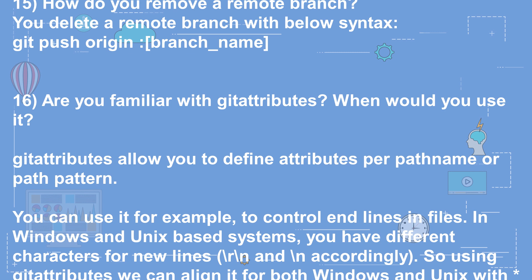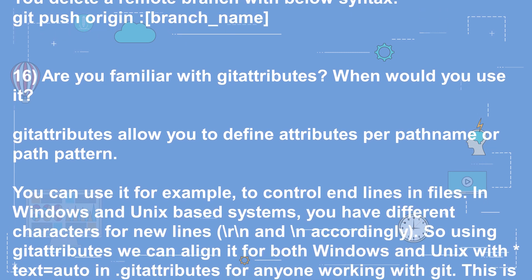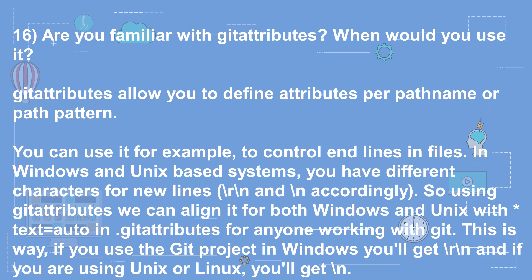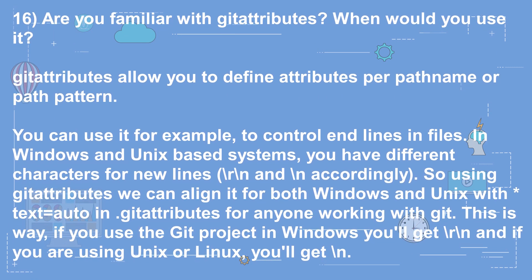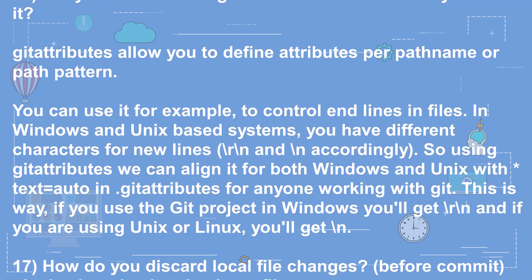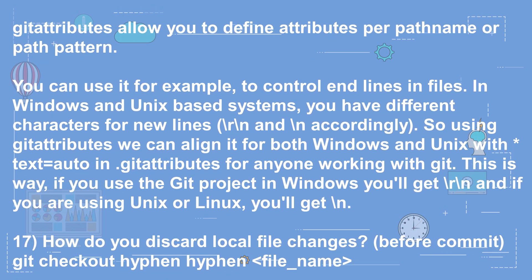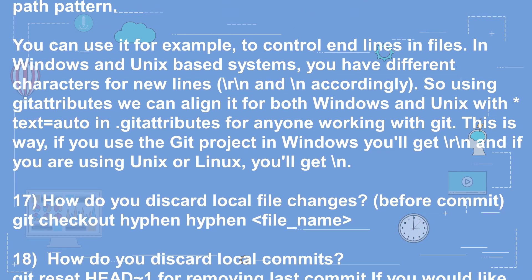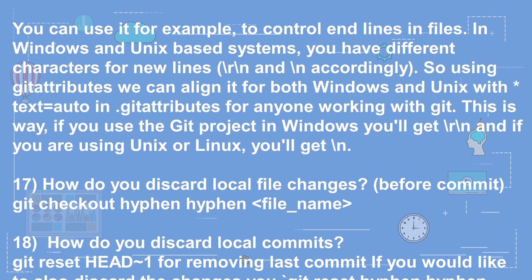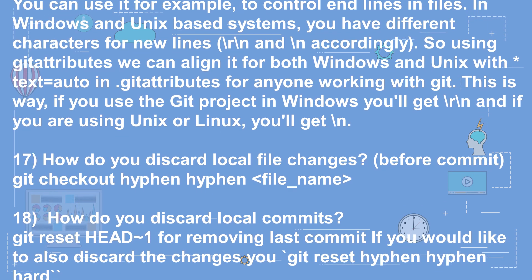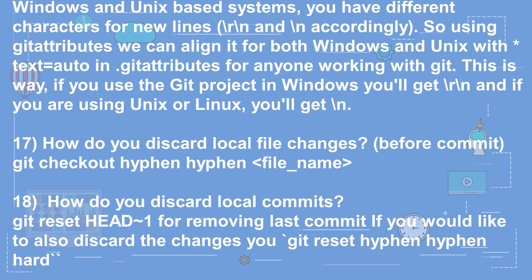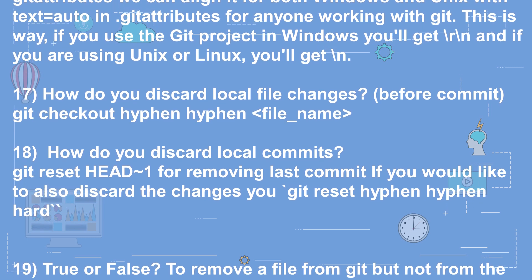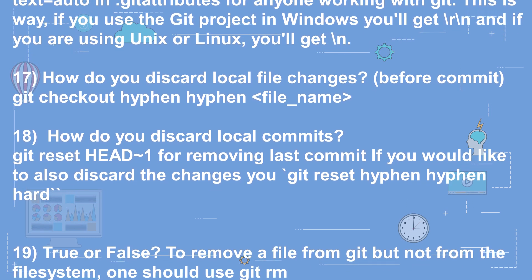Question 16: Are you familiar with git attributes? When would you use it? Git attributes allow you to define attributes per path name or path pattern. For example, you can use it to control line endings in files. On Windows and Unix-based systems you have different characters for new lines (\r\n and \n respectively). Using .gitattributes with text=auto, you can align this so Windows users get \r\n and Unix/Linux users get \n.